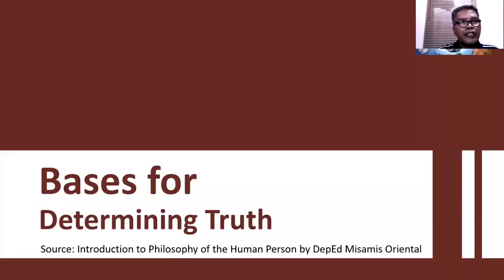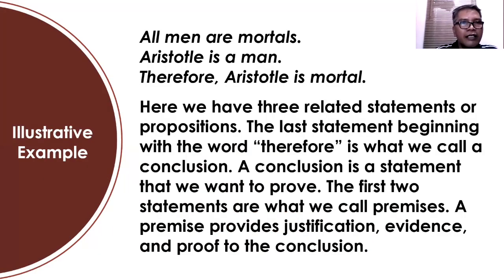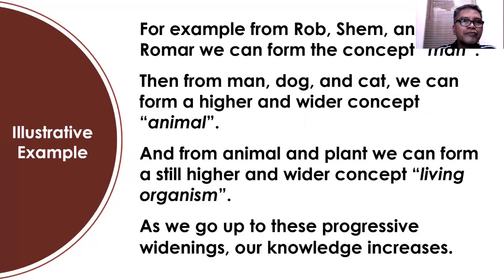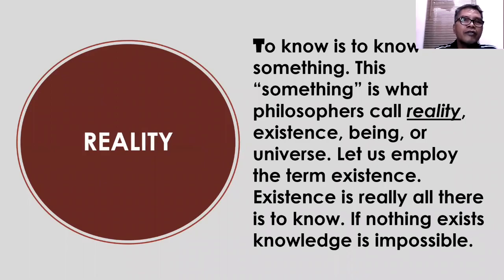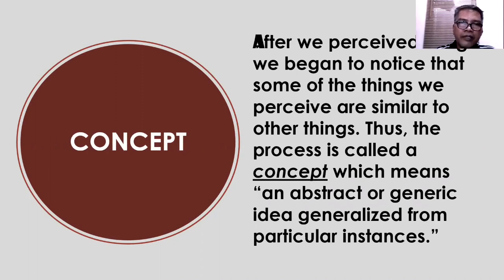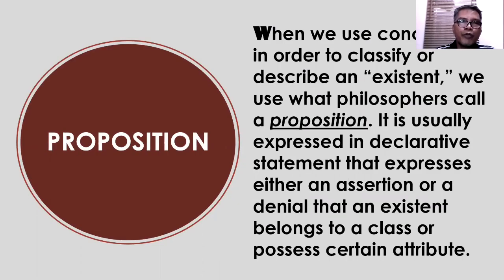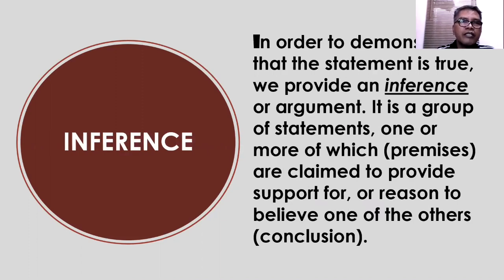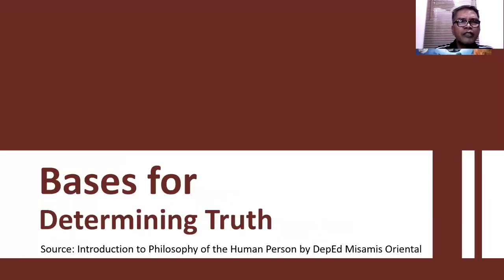That's all for the topic about the process of acquiring knowledge. To recap: we have reality, then perception, then concept, then proposition, and the last one is inference or argument. Now, since our topic is all about the essence of knowledge and truth, let's discuss the basis for determining truth — because in acquiring knowledge, the ultimate goal is the truth.